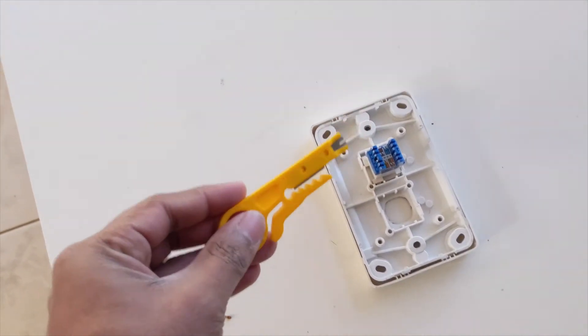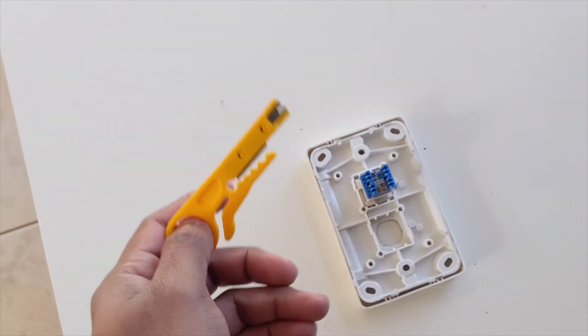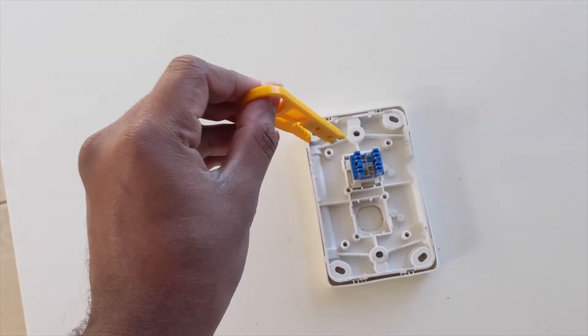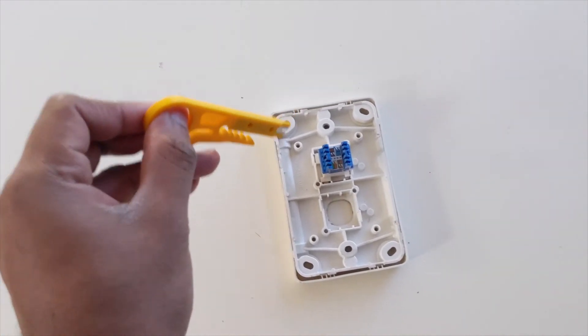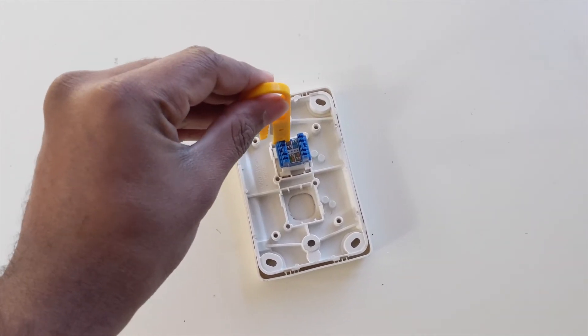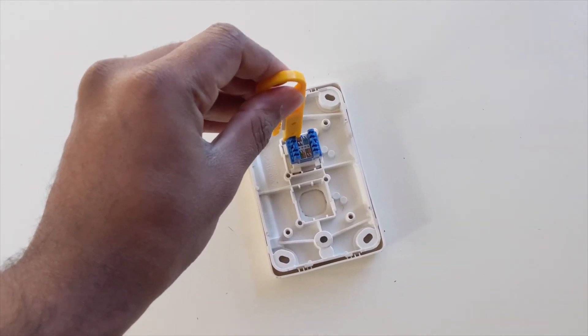You don't need to buy the expensive version, like the proper punch-down tool that cuts off the wires going outside the sockets. Just punch it—keep the wire and punch it like this.